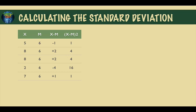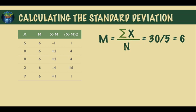Your set of scores appears in the first column. You calculate the mean by adding up these values and then dividing by the number of scores, in this case five. So our mean for this data set is six.